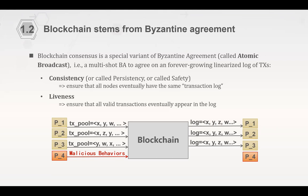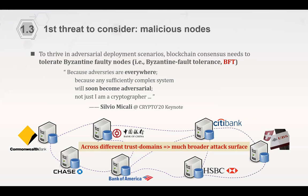When deploying such protocols in real-world scenarios, we need to consider many attacks and threats. First, we must be secure against malicious nodes. Since blockchain operates across different trusted domains maintained by mutually distrustful parties, there is a very large attack surface, and we must tolerate malicious nodes that may behave arbitrarily in the system.